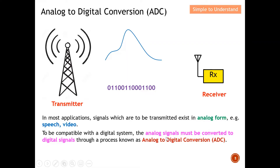In short, ADC converts the original signal, which is analog, to a digital format, so that it is suitable to send over to the receiver as we move into the digital era.